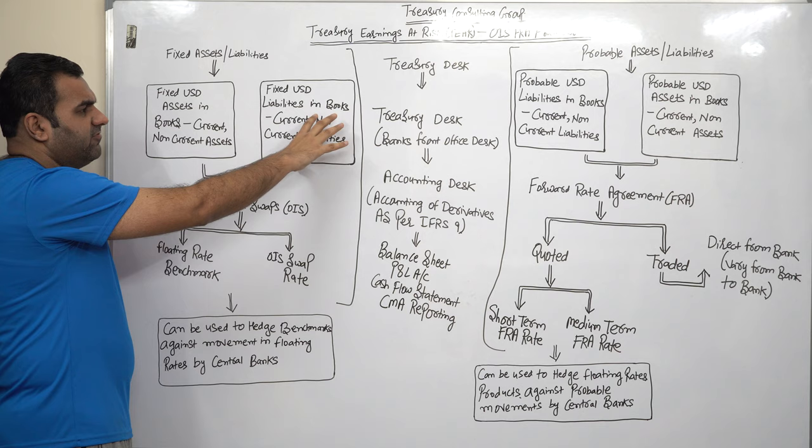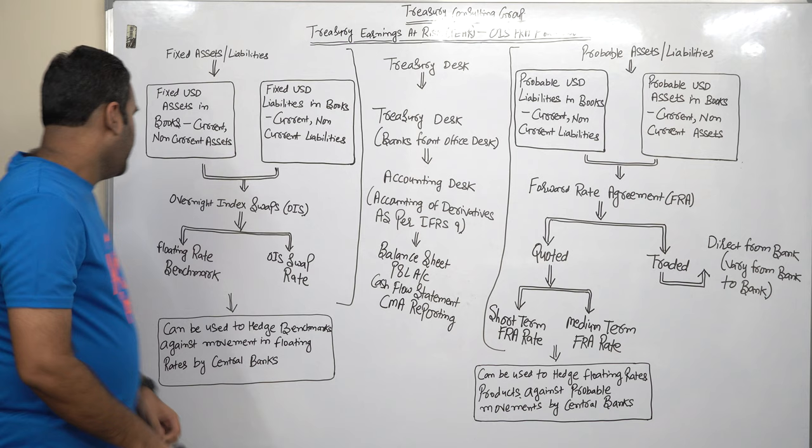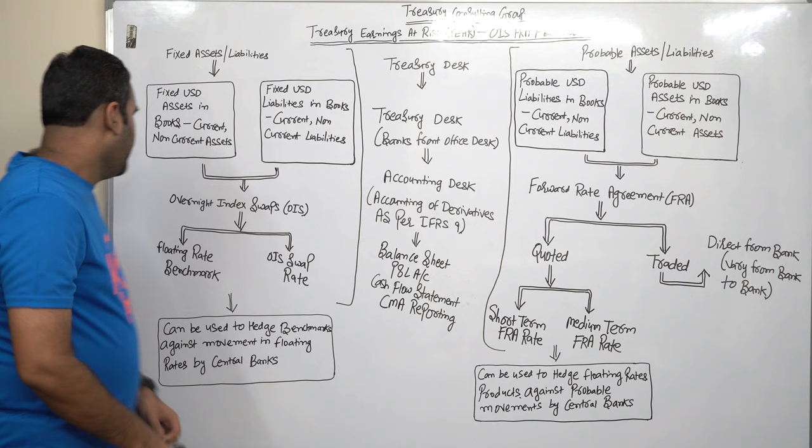So you have current and non-current assets. You have current and non-current liabilities. Similarly, you have current and non-current probable. And current and non-current probable, asset and liabilities. Now here, I am going to be covering overnight index swap.